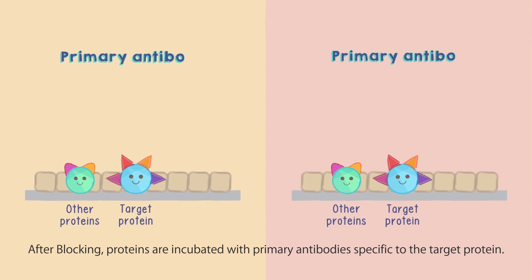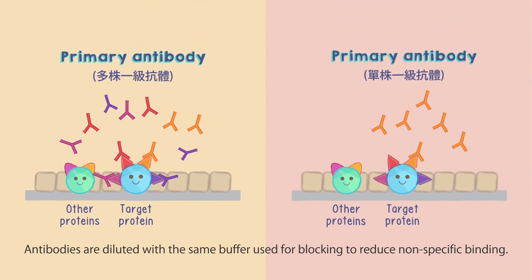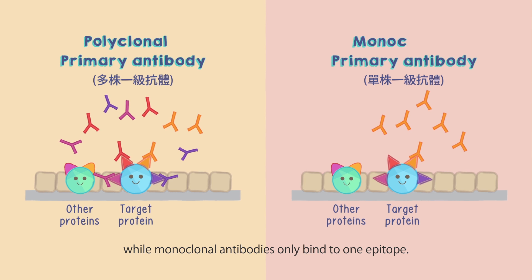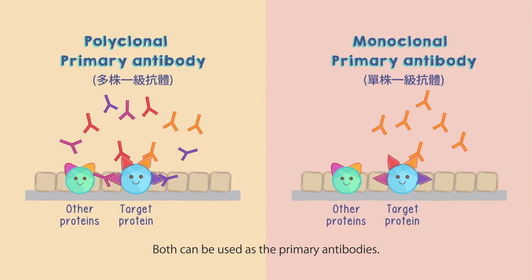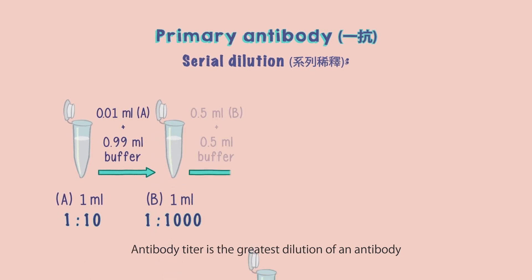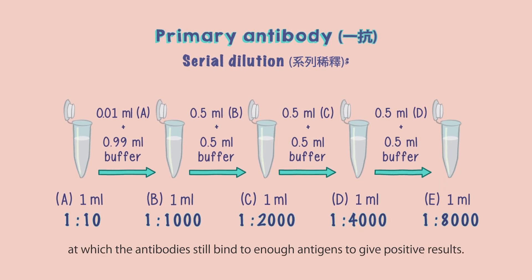After blocking, proteins are incubated with primary antibodies specific to the target protein. Antibodies are diluted with the same buffer used for blocking to reduce non-specific binding. Polyclonal antibodies recognize multiple epitopes on the target protein, while monoclonal antibodies only bind to one epitope; both can be used as primary antibodies. The antibody dilution depends on the antibody titer, which is the greatest dilution of an antibody at which the antibodies still bind to enough antigens to give positive results.